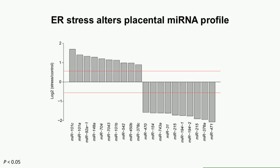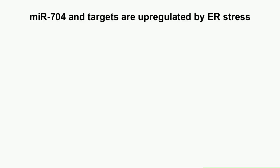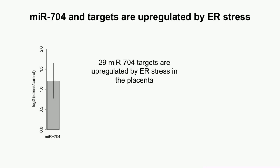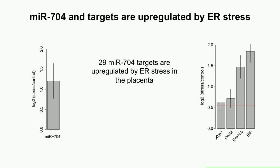One really interesting preliminary finding is that microRNA-704 and its targets are both upregulated by ER stress in the placenta. MicroRNA-704 is upregulated over twofold, and 29 of its predicted targets are also upregulated. The simplistic model is that if a microRNA goes up, its targets go down — but there's already evidence that's not always the case. Four of those targets are canonical ER stress genes, including XBP1 and BIP, all upregulated one-and-a-half to almost fourfold. This really suggests complex regulation between ER stress microRNAs and the genes aimed at resolving ER stress in the cell.